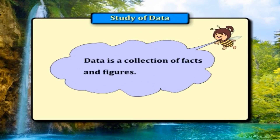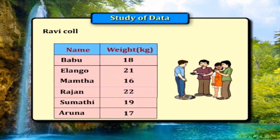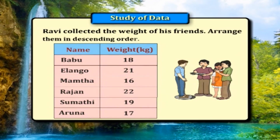Data is a collection of facts and figures. Ravi collected the weights of his friends: 22, 21, 19, 18, 17, 16. Arrange them in descending order.